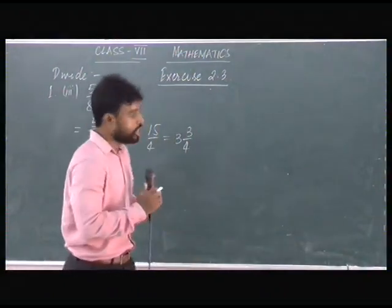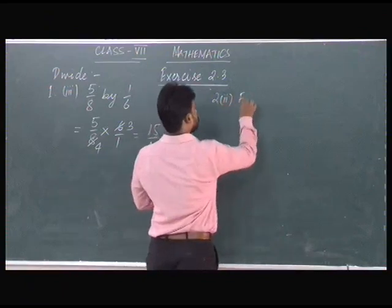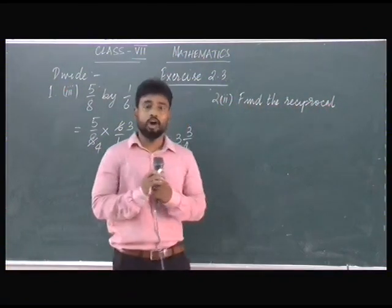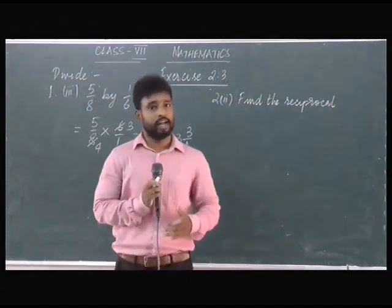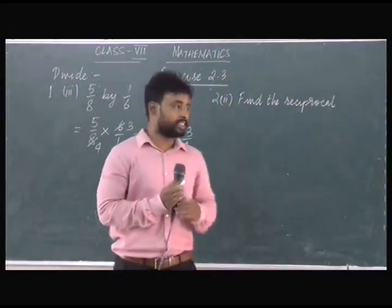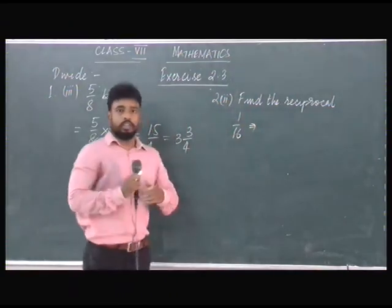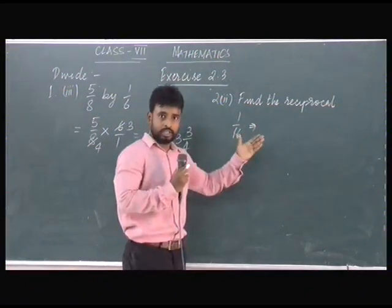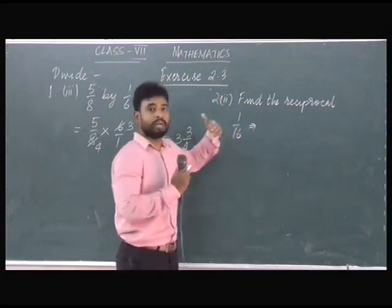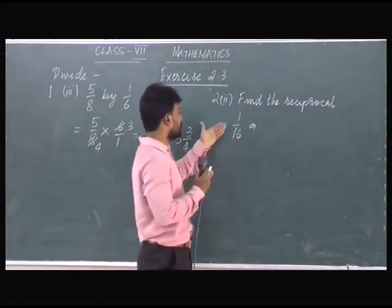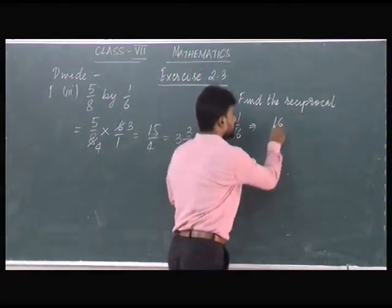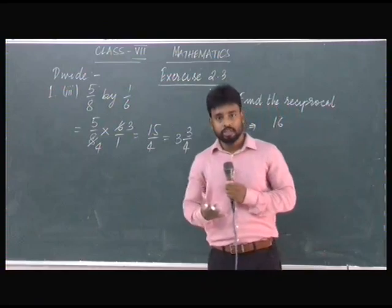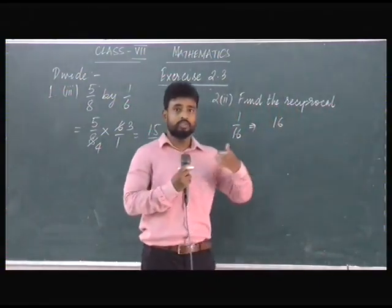Let us come to question number 2, part 2. Here we have to find out the reciprocal. You know that in order to find the reciprocal of a fraction, 1 has to be divided by that fraction. So here we have 1/16. The reciprocal of 1/16 will be 16/1, or simply 16, because the numerator becomes the denominator and the denominator becomes the numerator. So 1/16 becomes 16, the reciprocal of 5/2 is 2/5, and 3/5 gives 5/3.